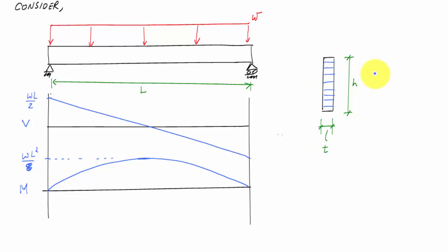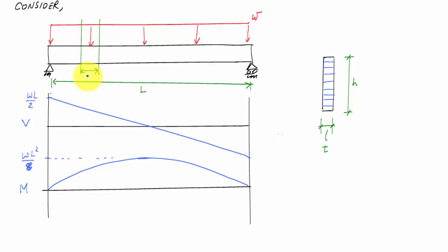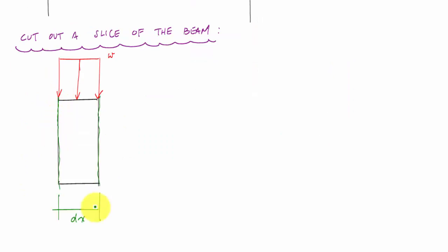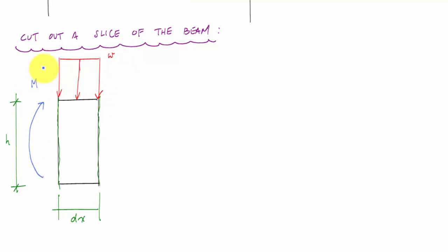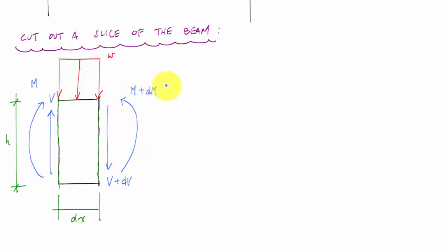Before we get into that, let's take a slice or incremental length of this beam. I'll cut out a length dx, so here's my cut. The height is still h. On the left side of this element I have a positive internal moment — causing compression at the top and tension at the bottom — and a positive internal shear pointing upwards. On the right side I have V plus dV from equilibrium, and a moment M plus dM.